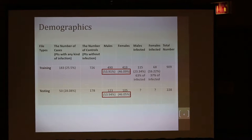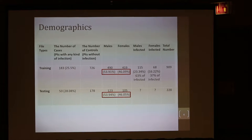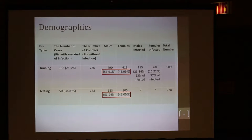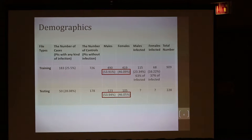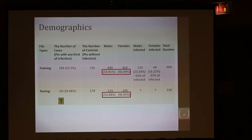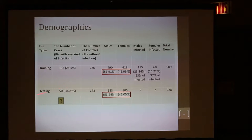Basically, males had more infections. In the testing group, 50 were supposed to have had infection — SSI, surgical site infection — and 178 were not infected. So the organizers had nicely matched the data set for the competition. Our task was to identify that mystery 50 patients in the given data set.